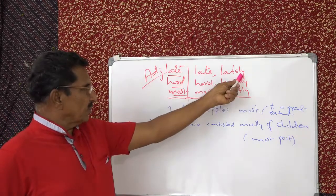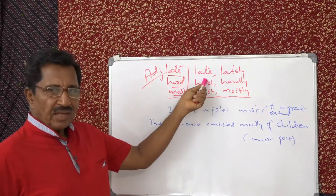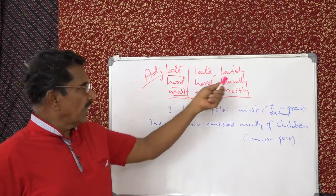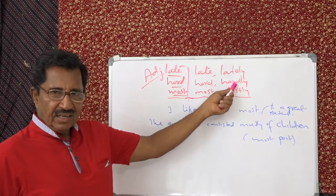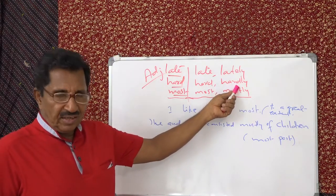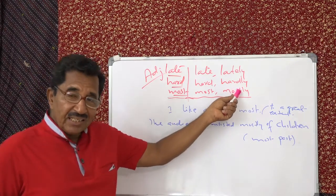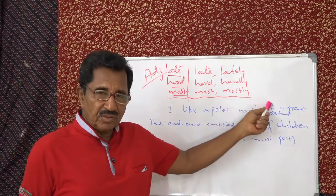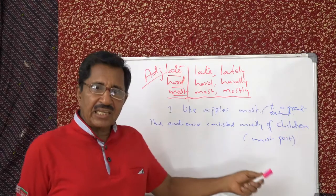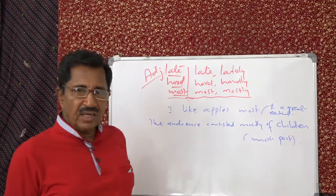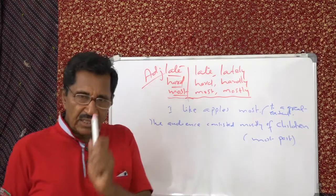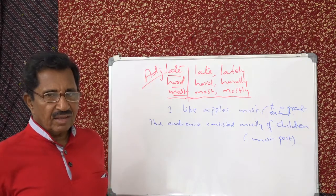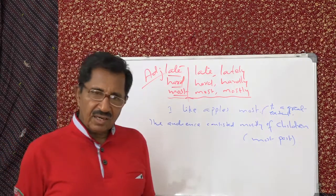So late has got two adverbs - late, lately. This means after the time expected or towards the end of a specified period of time. Lately means recently. It can be used only with perfect tense. When the meaning is recently you cannot say I bought books lately. You have to say I have bought some books lately. I haven't seen him lately.